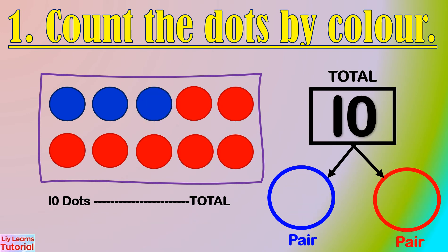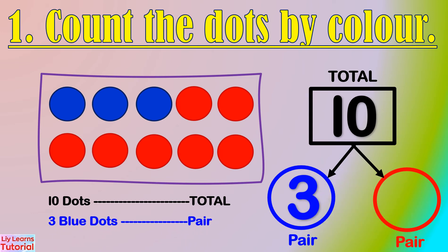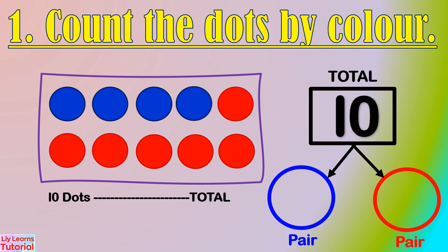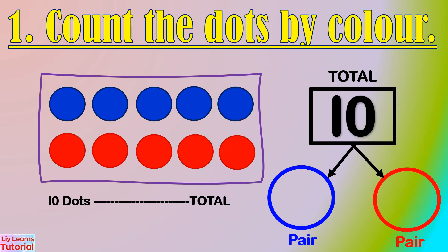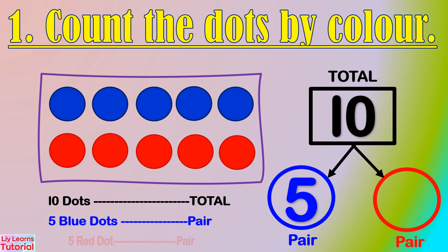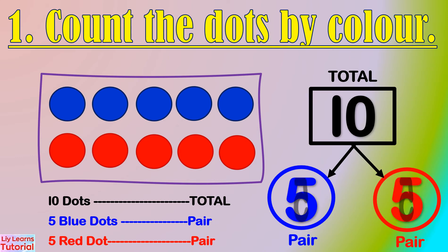In this example, there are 3 blue dots and 7 red dots. The number pair is 3 and 7. Here, there are 4 blue dots and 6 red dots. The number pair is 4 and 6. There are 5 blue dots and 5 red dots. The number pair is 5 and 5.